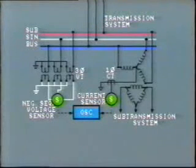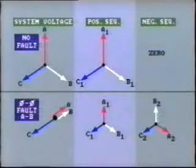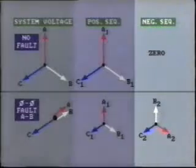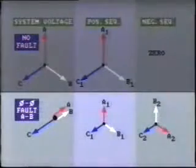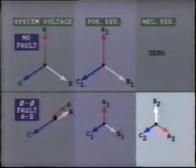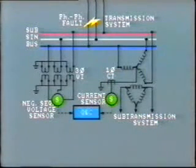We can also use a negative-sequence voltage sensor connected to the bus, which will sense a phase-to-phase fault on any line connected to the bus. A phasor diagram from an earlier lesson shows the voltage broken down into its positive and negative-sequence components. Before the fault, we have balanced three-phase voltages and the negative-sequence component is zero. As soon as the fault is applied between A and B phases, the negative-sequence voltage suddenly increases. So when this sensor detects negative-sequence voltage, we can be quite sure that a fault has occurred and recording can begin.